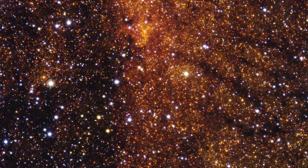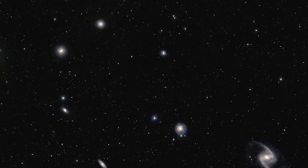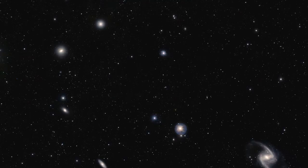The Fornax cluster of galaxies is one of the nearest rich collections of galaxies. VISTA's large field allows many of the cluster's galaxies to be imaged at once, including the elegant classical barred spiral galaxy NGC 1365 at the lower right. This unique image shows several of VISTA's impressive capabilities.